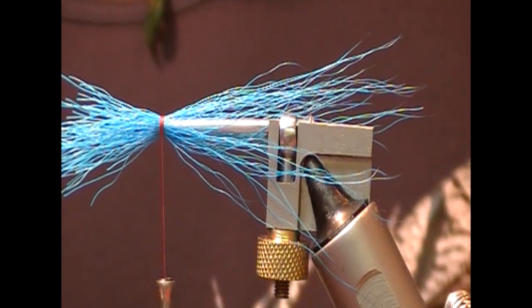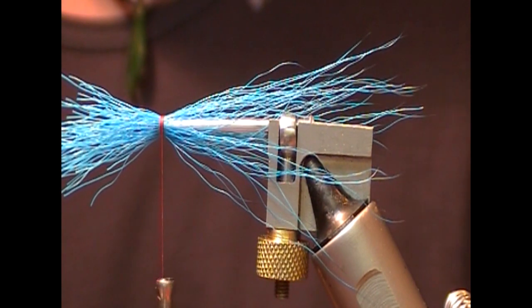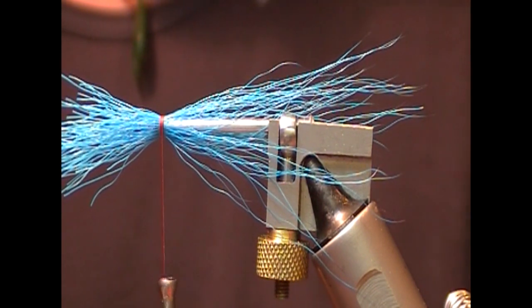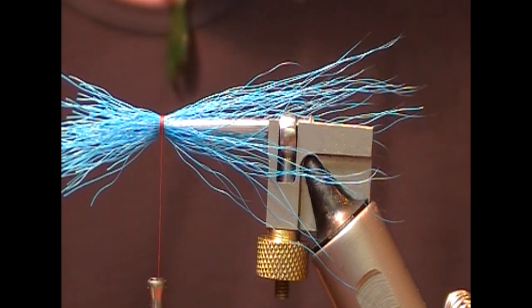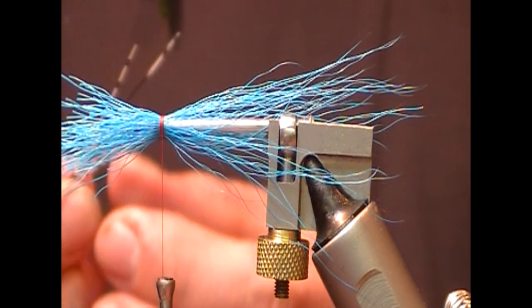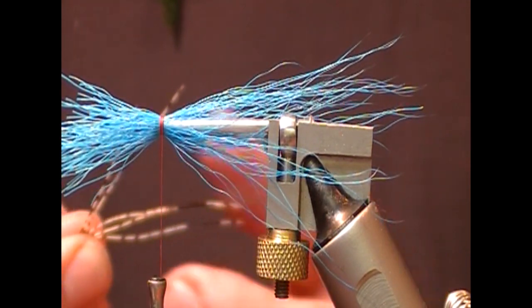So next portion is the Amherst. So we have an Amherst tail here and I'm going to take off a few fibers of that, 6 or 8 or something like that. And what I'm going to do here is just separate those out from each other a little bit.